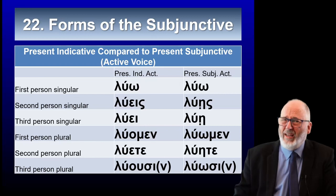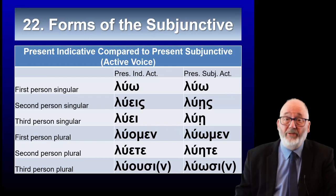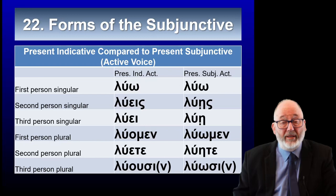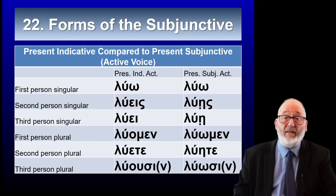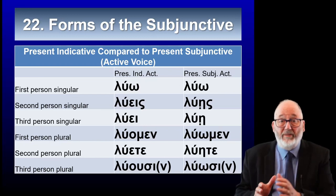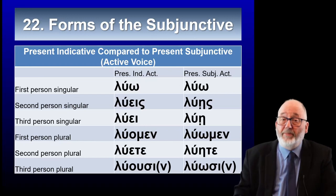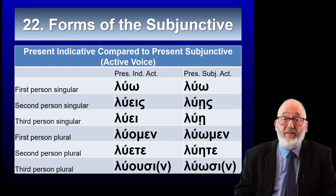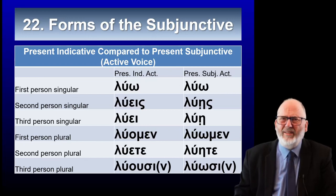The only trouble is you can't tell on the first person singular, because luo and luō are accented exactly the same way. Normally the context will tell us — as I have just said, subjunctives are signaled with one of the words in the vocabulary, and you will know to expect a subjunctive. And if it is luo, well, the odds are that it is in fact a subjunctive.